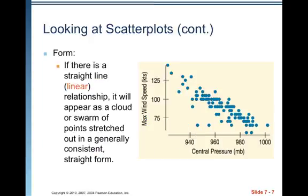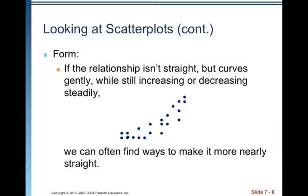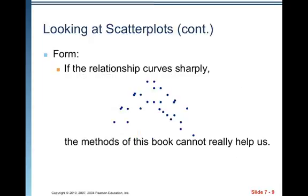The next thing we look at is form. If there is a straight-line linear relationship, it will appear as a cloud or swarm of points stretched out in a generally consistent straight form. If the relationship isn't straight but curves gently while still increasing or decreasing steadily, we can often find ways to make it more nearly straight. If the relationship curves sharply, the methods of this book cannot really help us — it's beyond the scope of this course.